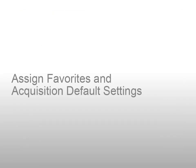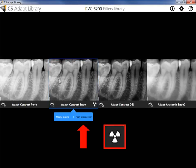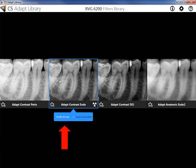Assign Favorites and Acquisition Default Settings. When the CS ADAPT Filter Library is opened, you can assign a favorite to its corresponding button and select a favorite to be applied at acquisition. The filter selected to apply at acquisition is identified by the X-ray symbol. Click Modify Favorite to select filters displayed by each control panel button.